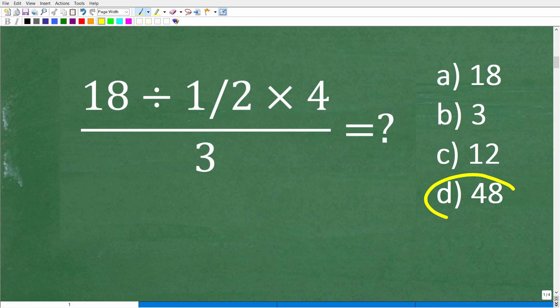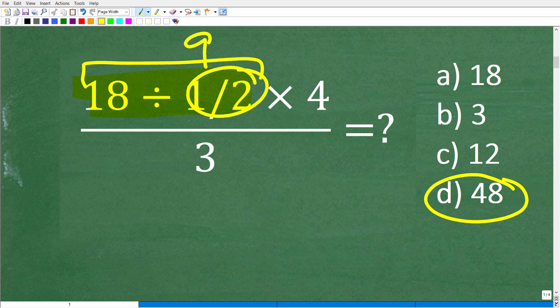All right, so we know that the correct answer is D, 48. But let's do this problem in a different way and obviously make some mistakes here. So what if someone said, well, I think I'm going to start right here, 18 divided by 1/2. And maybe in their mind's eye, this fraction 1/2, they just looked at this 2 and did like 18 divided by 2. So that would be 9. So that definitely can happen.